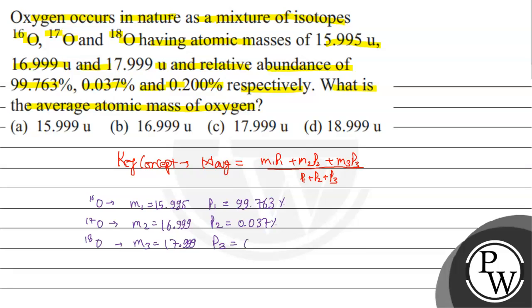We will put all these values in the formula. From there, M average will be equal to 15.995 into 99.763 plus 16.999 into 0.037 plus 17.999 into 0.200, divided by 99.763 plus 0.037 plus 0.200.